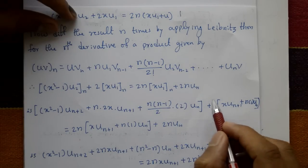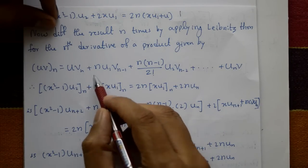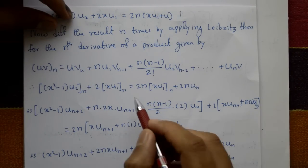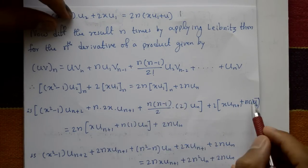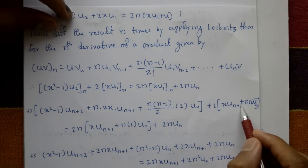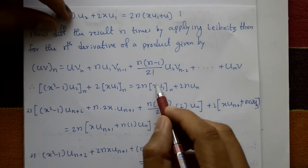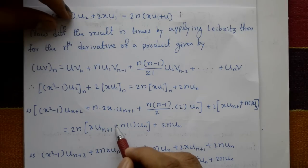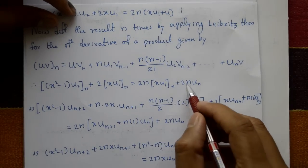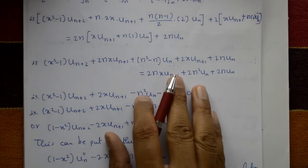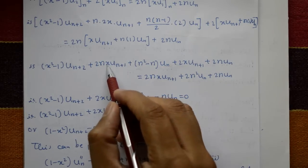Continuing: applying Leibniz to 2x·u_{n+1} gives x·u_{n+2} + n·u_{n+1}. The right-hand side becomes 2n·x·u_{n+1} + n·u_n. So we have (x² - 1)·u_{n+2} + 2nx·u_{n+1} plus additional terms on the left equaling the right-hand side.